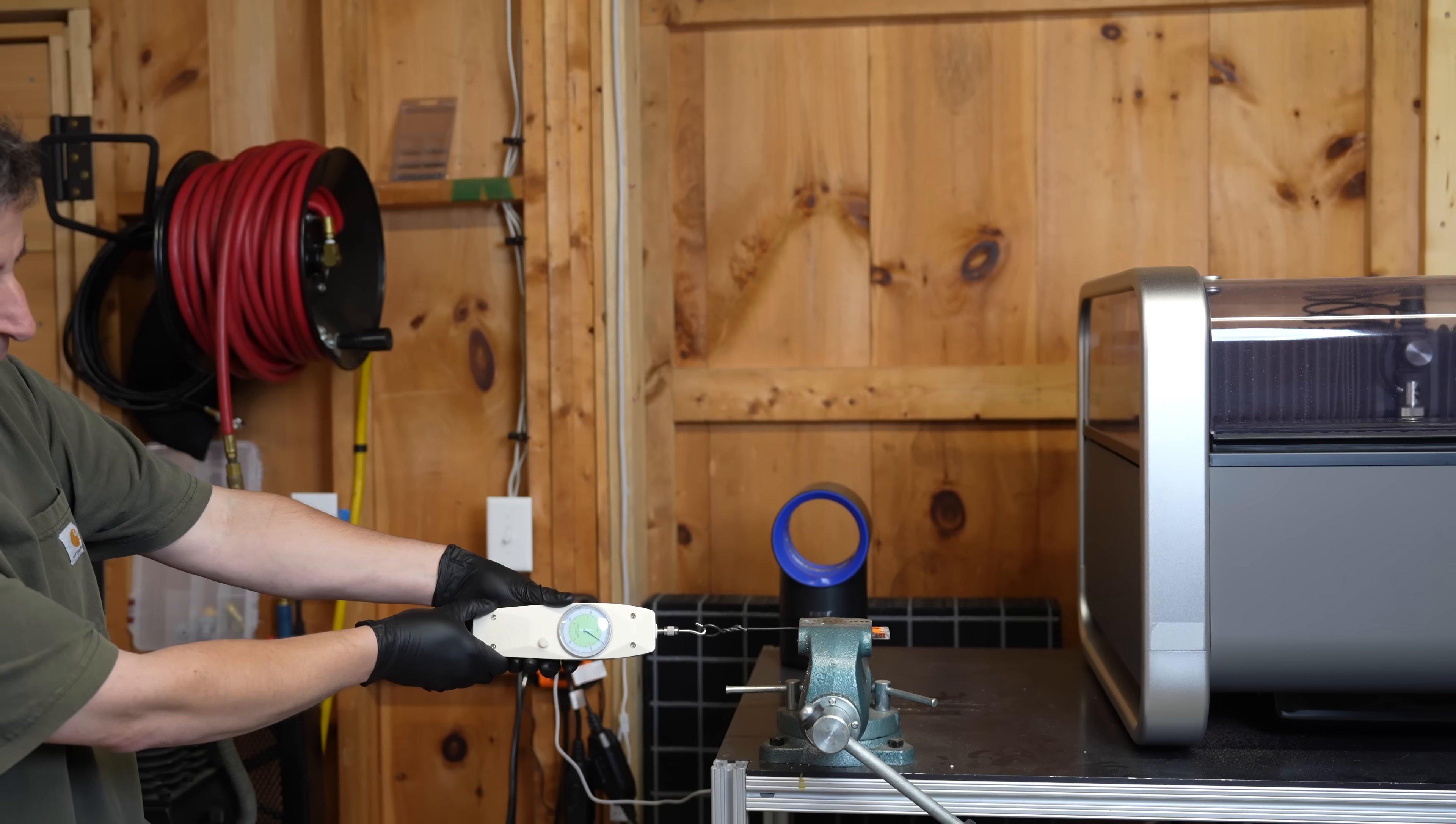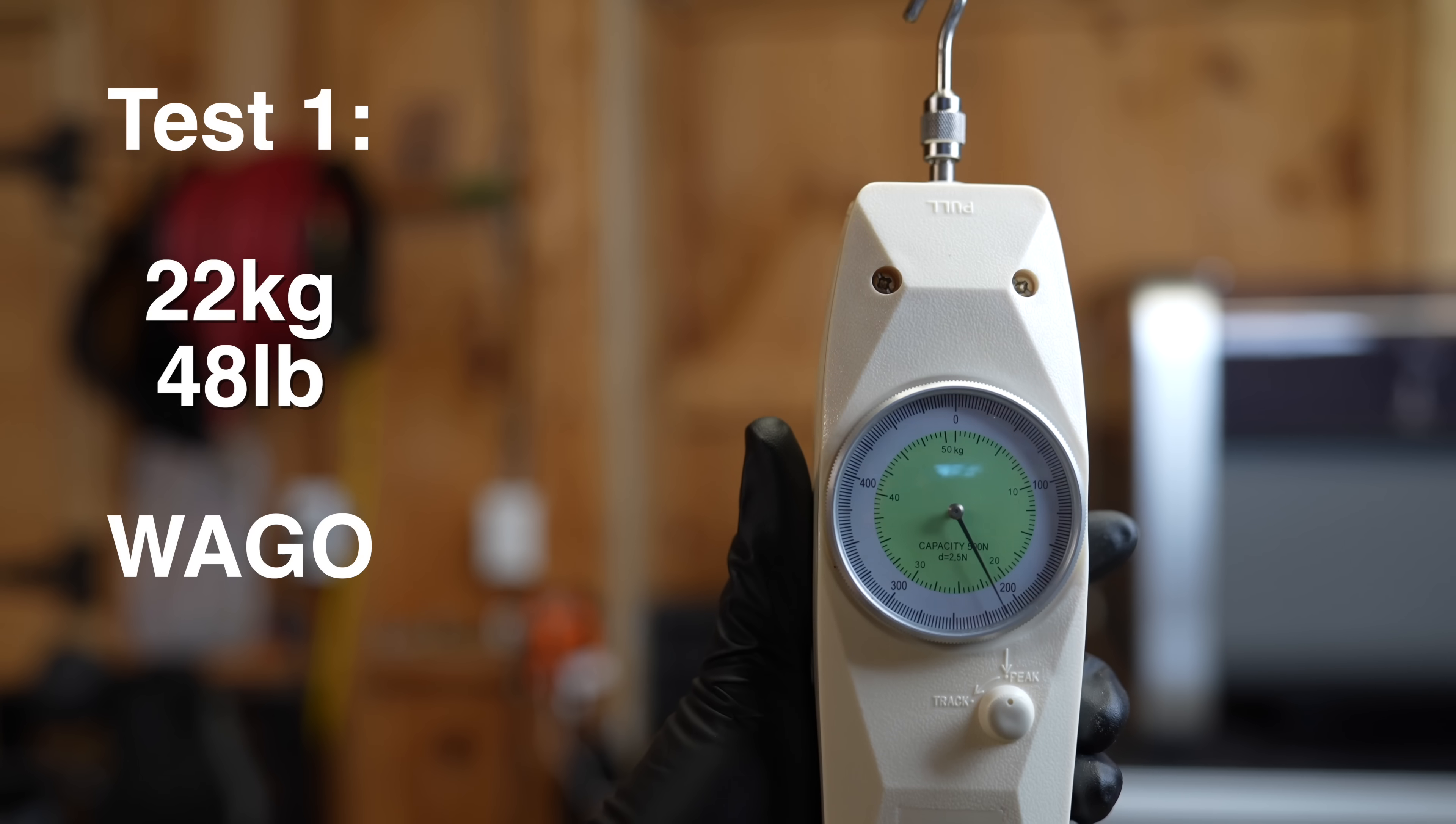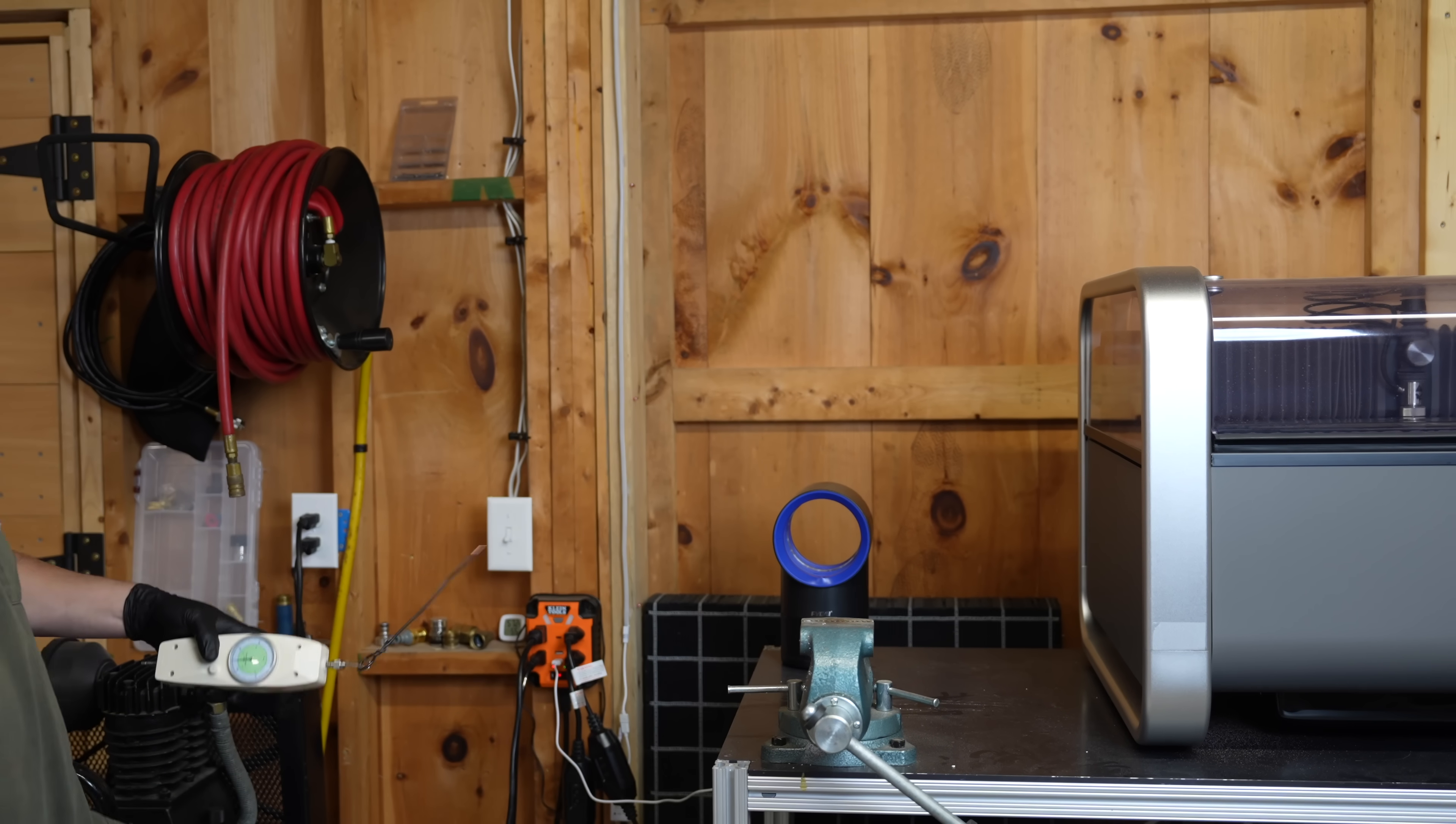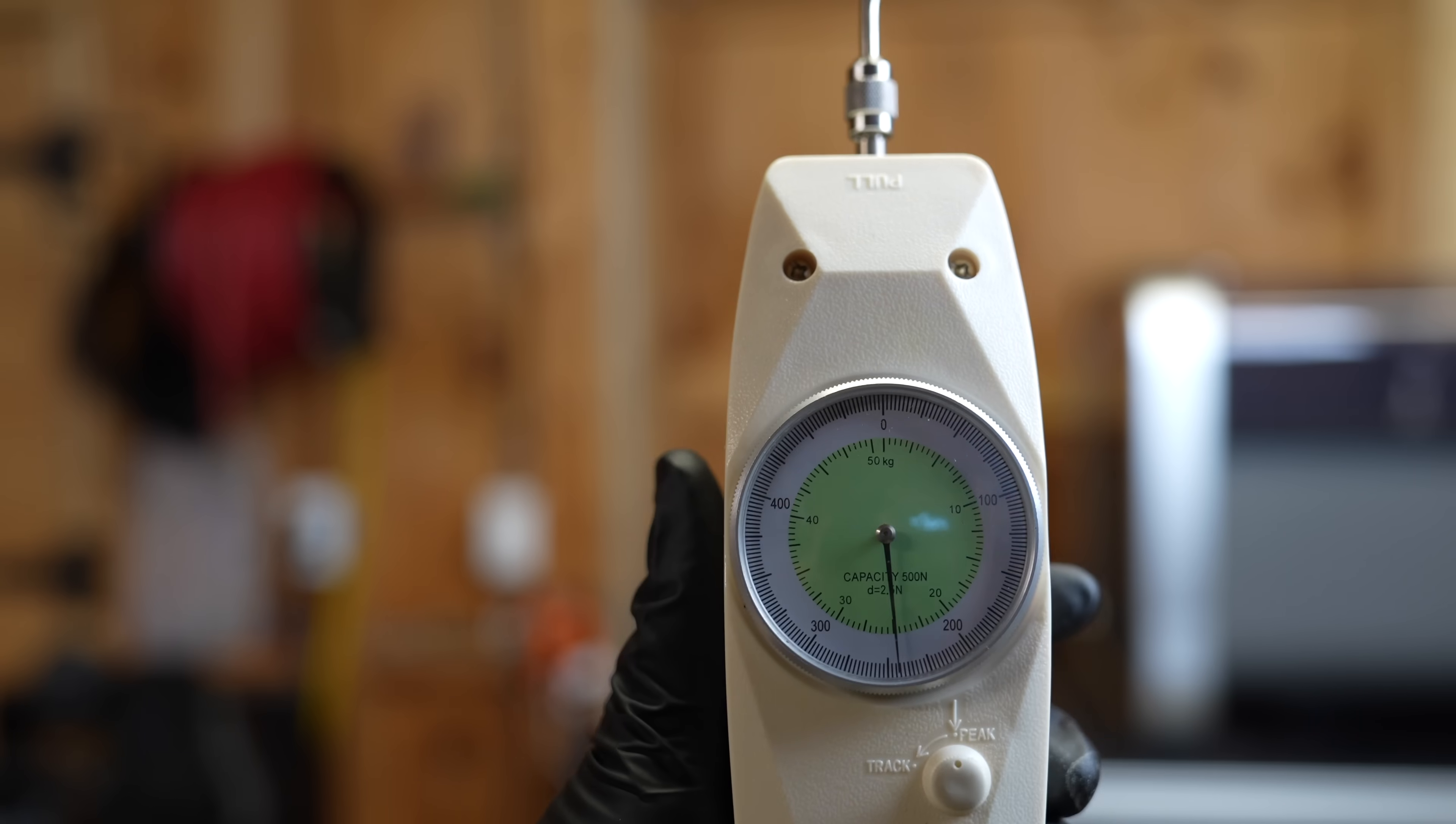Starting with our first test on the Wago, it took 22 kilograms of force or 48 pounds, which would be the equivalent of about 8 gallons of milk hanging off that wire. Repeating that same test on the Wago, I got a similar 25 kilograms or 55 pounds of breaking force.